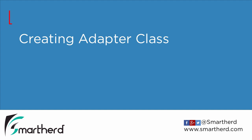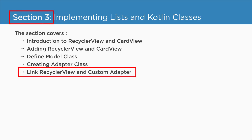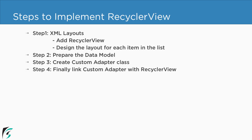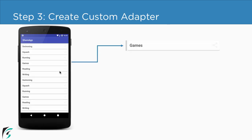Currently we are in section 3 and we are about to check out this video, which is the fourth video of this section. In this video we will check out how to create the custom adapter class. For this we are about to check out our third step, and using this step we are about to link the data classes that we created in the previous video with the layout that we created in the first video. So for this we are about to create our hobbies adapter for the recycler view.